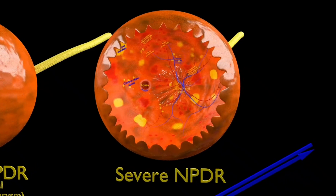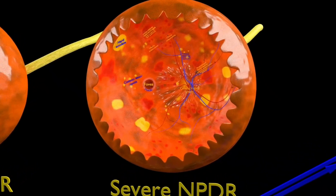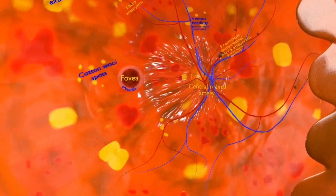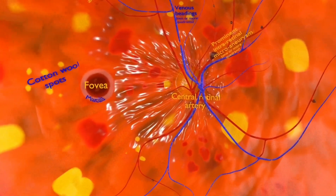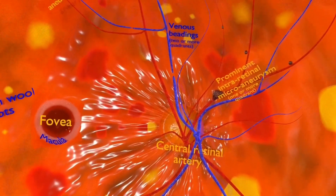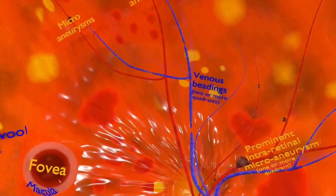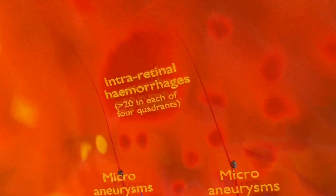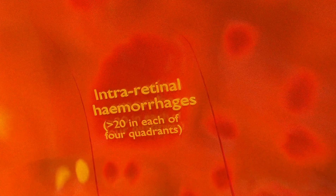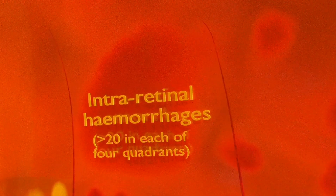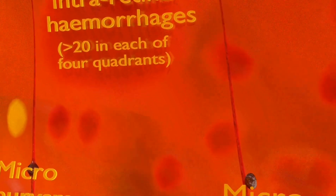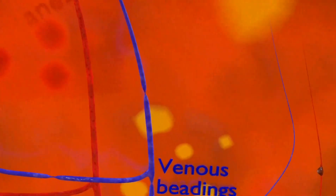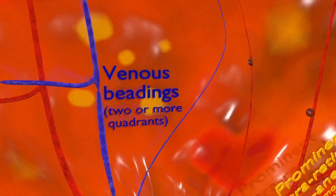Going ahead, we can see the case of severe NPDR. In severe NPDR, microaneurysms become more prominent, increasing in number, size, and distribution. The venous bleeding also involves two or more retinal quadrants.